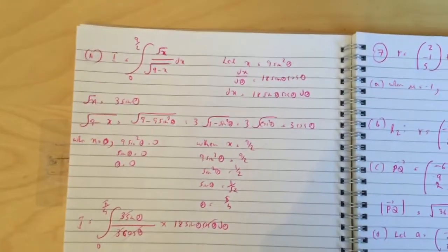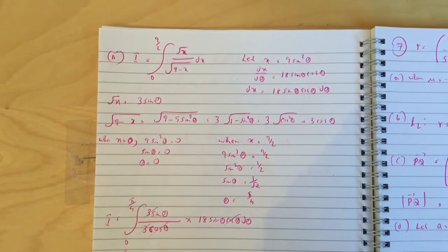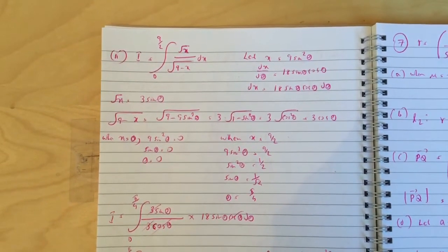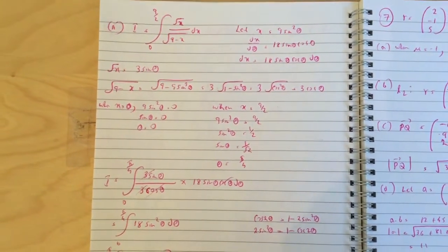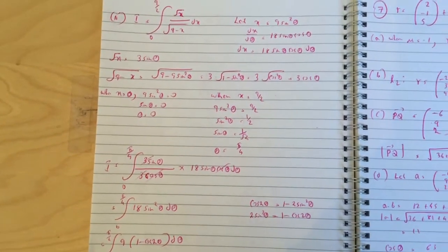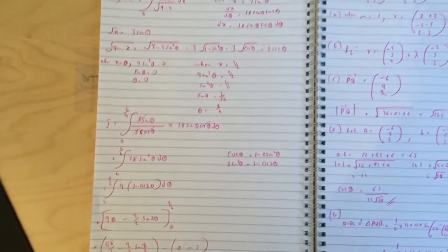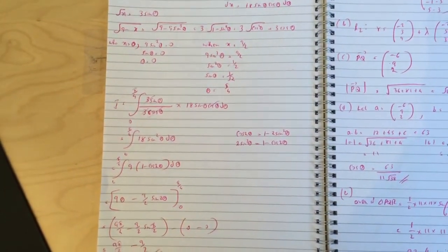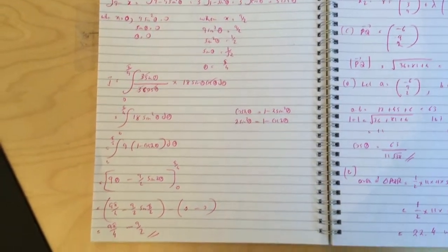For part b, it's a long question - if you can do part b here then you're pretty much ready for any question. For the integral I, the first thing is x equals to 9 sine squared theta, so dx/d theta equals to that and dx equals to 18 sine theta cos theta d theta. So root x equals 3 sine theta. Then you work out root 9 minus x and the values of x equals 0 and x equals 9 over 2, which becomes 0 and pi over 4. You plug everything into the integral, it cancels nicely and you get 18 sine squared theta d theta. Then you take the 9 out and it'll be 1 minus cos 2 theta, then you integrate it and this is the answer.